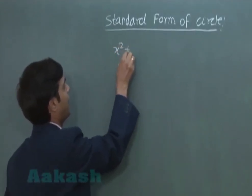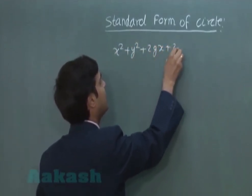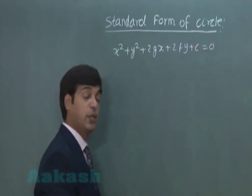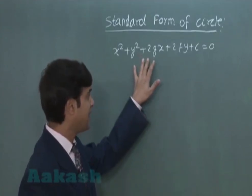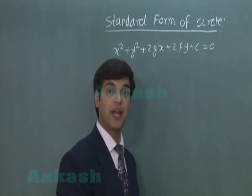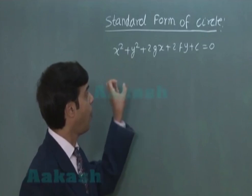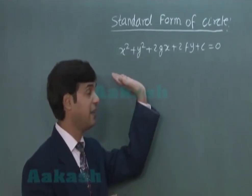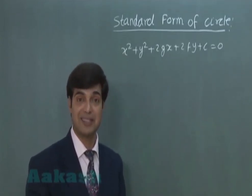Another form: an equation of the type x square plus y square plus 2gx plus 2fy plus c is equal to 0 is also a standard form of circle in a plane. It represents a circle with some condition, because the radius term must come out as non-negative. So let's see how it represents a circle, and if the equation is given in this format, how we can find the center and radius.